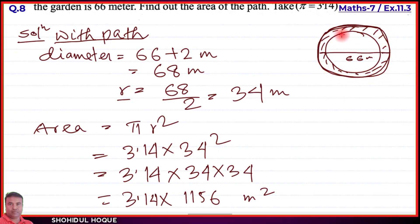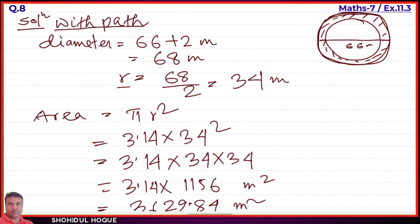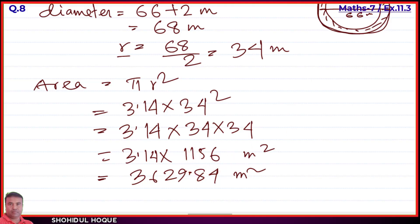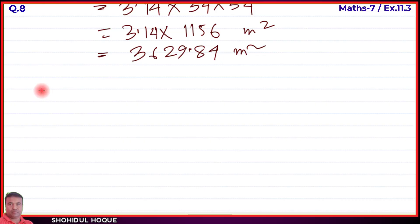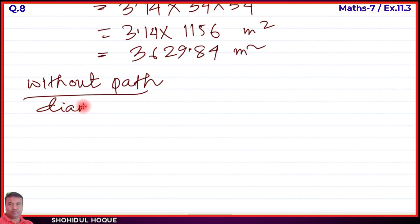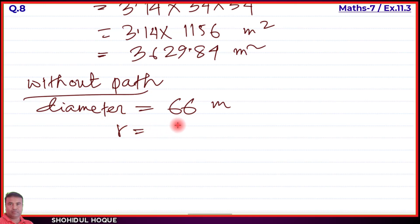That is the outer circle area including the path: 3629.84 square meters. Now for the inner circle — the circle without the path. The inner circle diameter equals 66 meters as given in the question. To find the area, we need the radius. Diameter divided by 2 gives the radius.